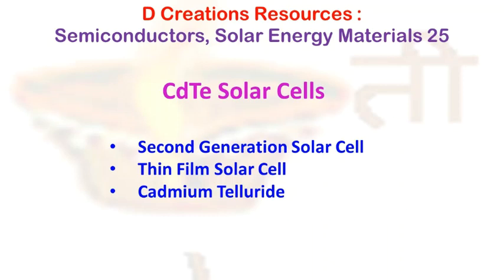The most important aspect of the CdTe solar cell is the photovoltaic material, which is essentially going to convert solar radiation into electricity. This is manufactured by creating a PN heterojunction. There is deposition of a layer of CdTe for the P-doped section, and one of CdS or MZO is used as the N-doped section. Together, they form this PN junction.